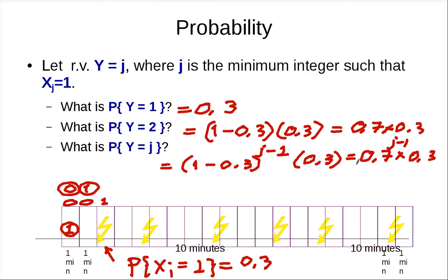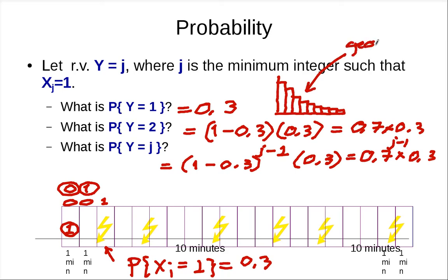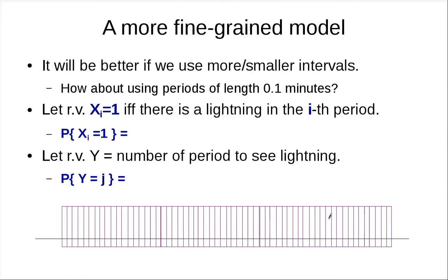We can use this kind of modeling to think about the distribution on the number of periods we have to wait. This distribution is geometric. Now, if we want to get closer to the real continuous thing, we increase the number of periods. Let's think about using 100 periods — so each period is 0.1 minutes. Since on average you see three lightnings per 10 minutes, the probability of seeing lightning in a 0.1-minute period is 0.03.